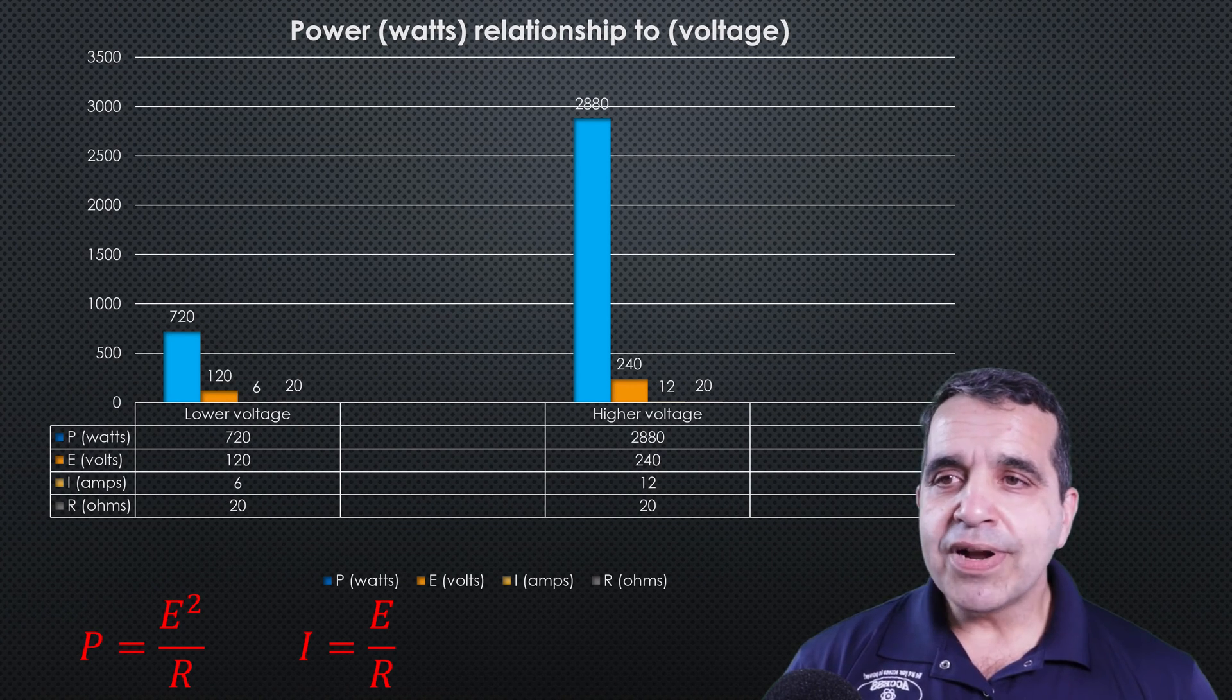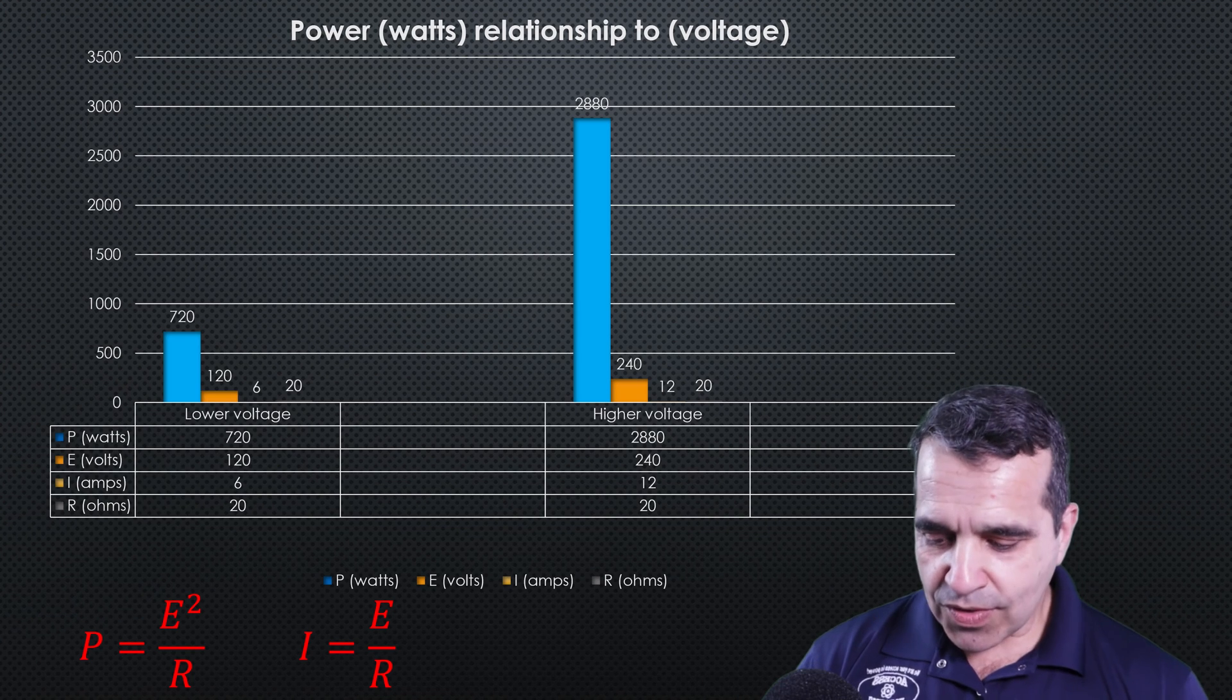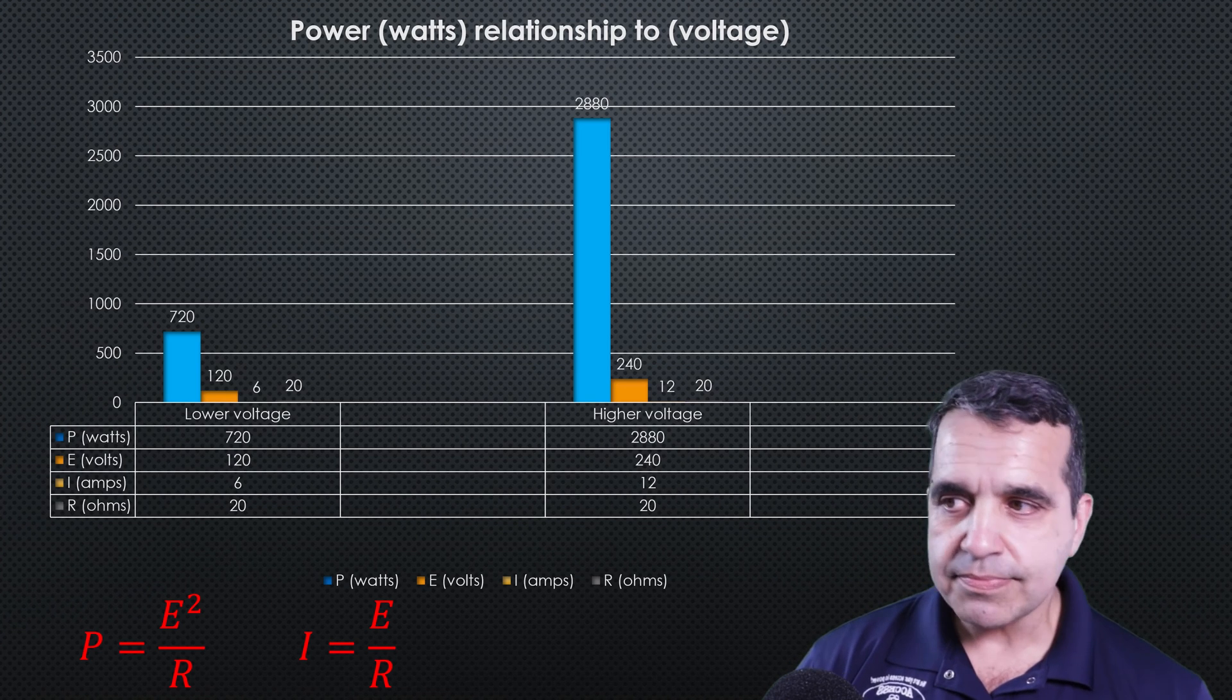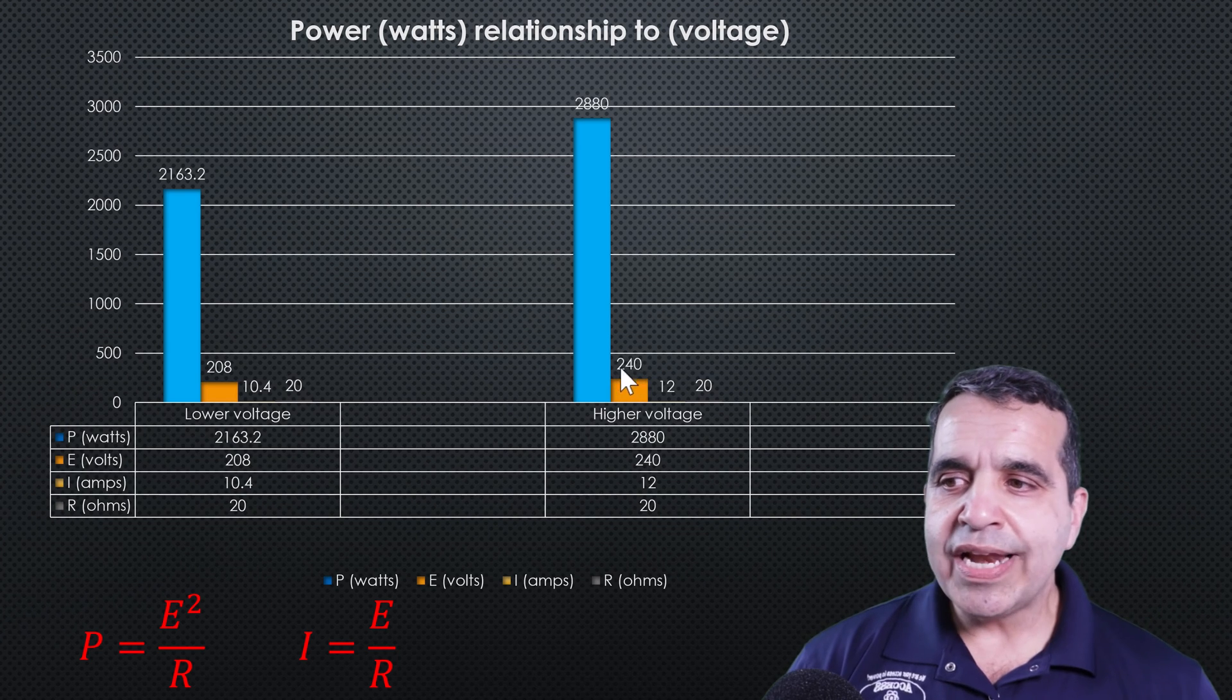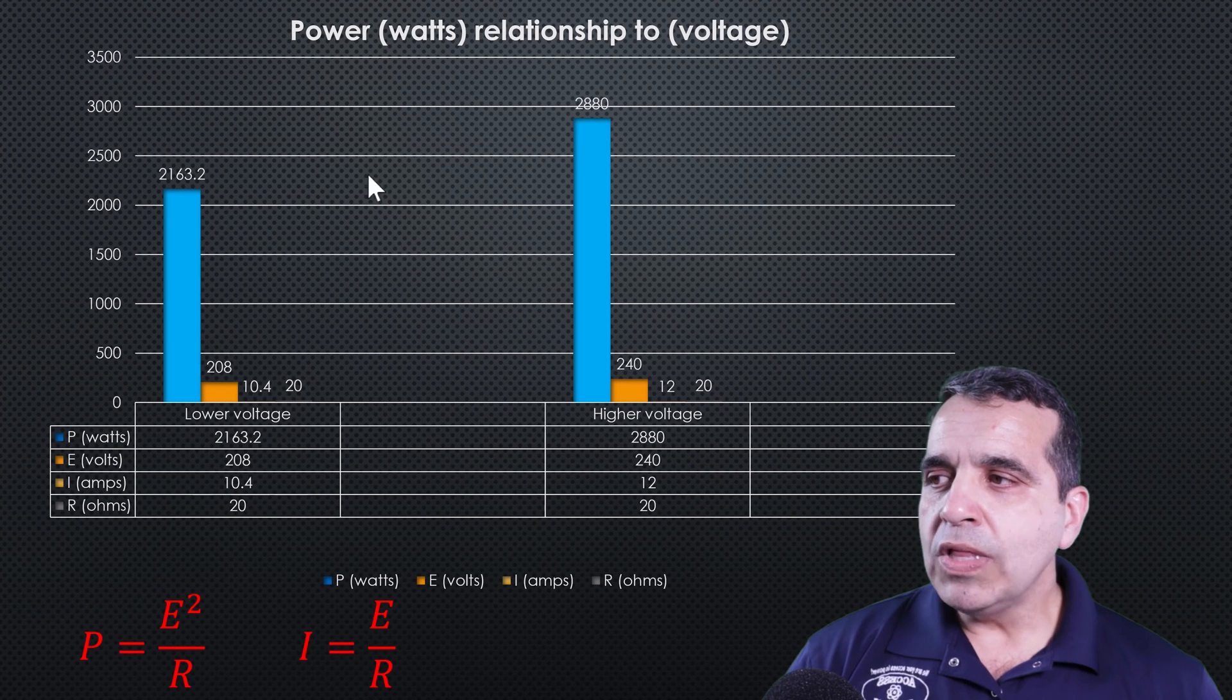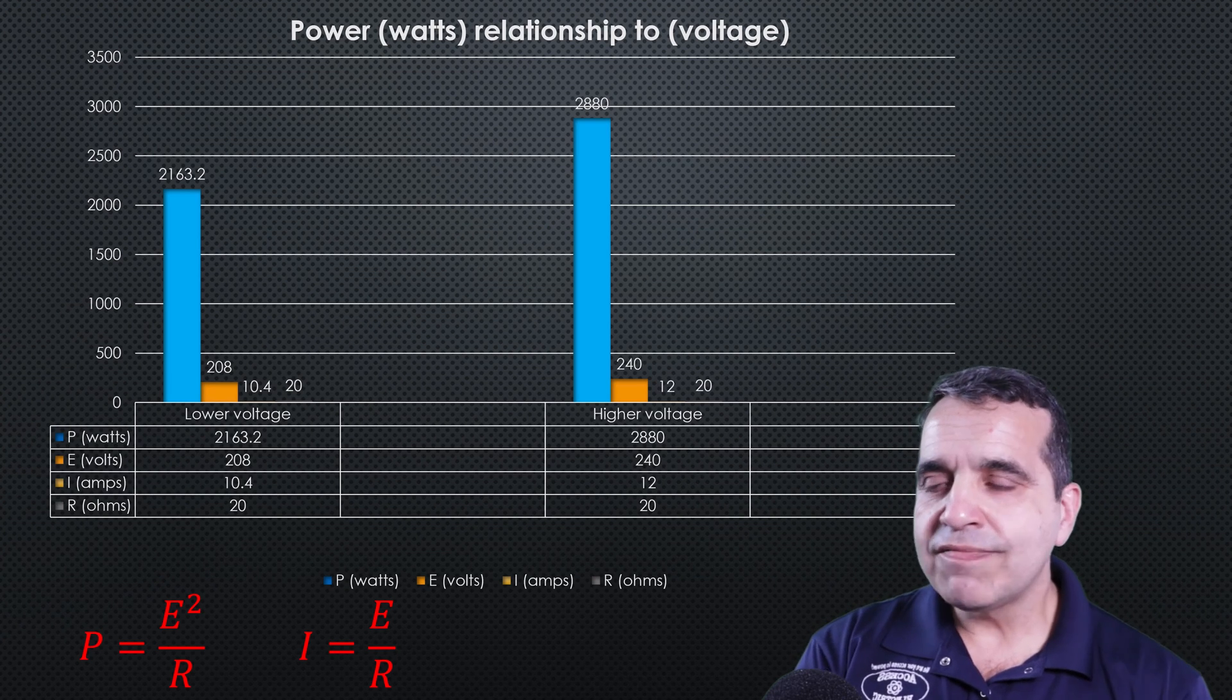But remember, any change in the voltage makes a dramatic effect on the amount of work that can be performed. So here, I'll change this 120 volt circuit back to a 208 volt circuit. And you can see, if I have a motor that's rated at 240 volts and I connect it to a 208 volt system, I'm only going to get about 75% of the work performed out of that motor.